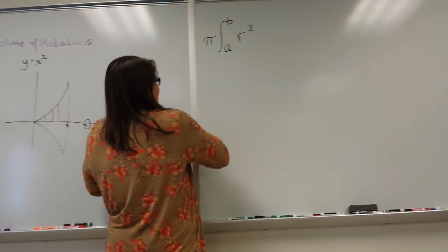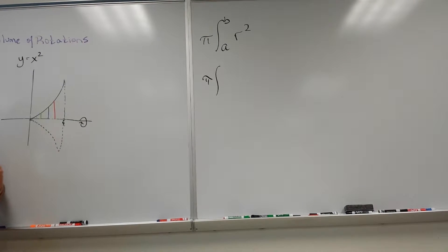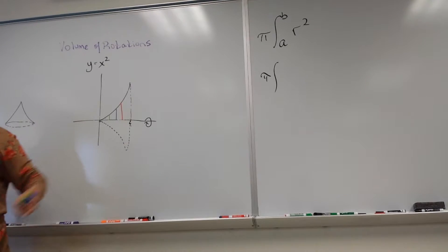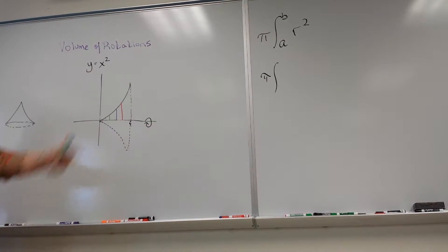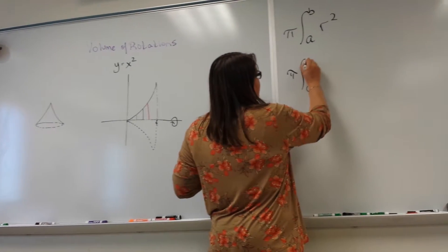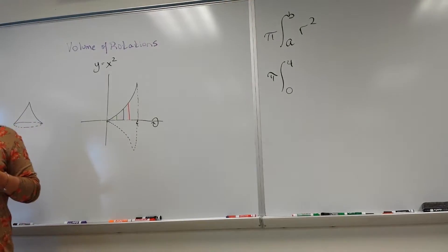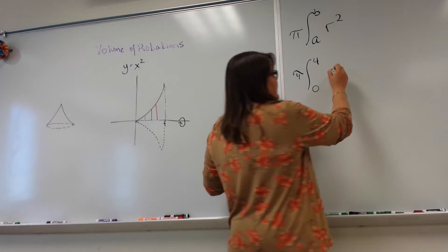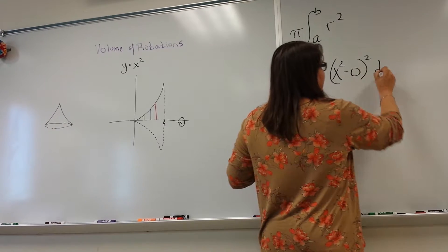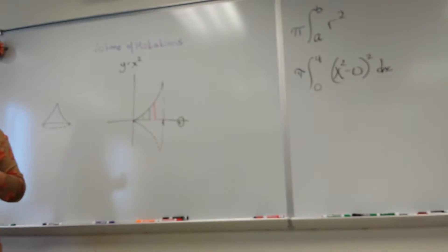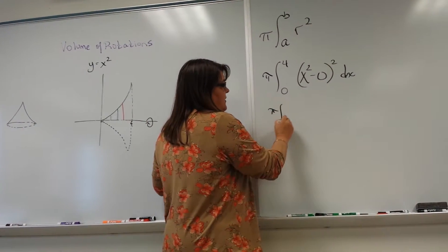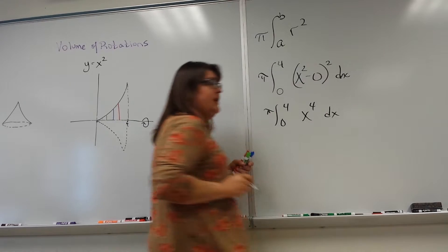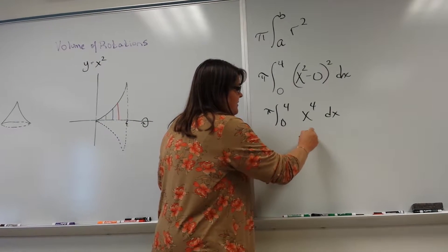So let's do that. We have pi from A to B — what's A? What's B? A is zero and B is four. Zero and four because that's what I told you, right? I could go from zero to two, zero to eighteen — it just depends on how big I want that Hershey's kiss. From zero to four. My radius is x squared, my floor is zero — so really it's x squared minus zero. Don't forget dx. Let's clean it up algebraically. x squared minus zero is just x squared, and x squared squared is x to the fourth.